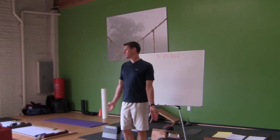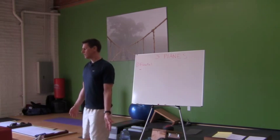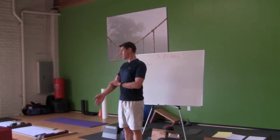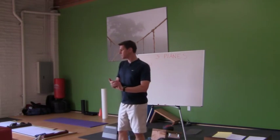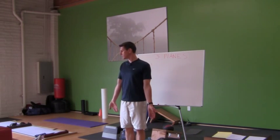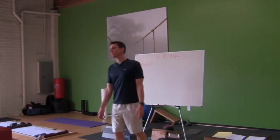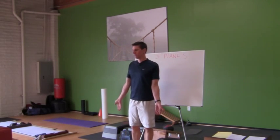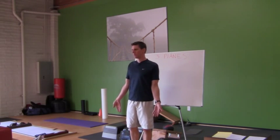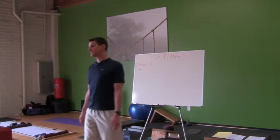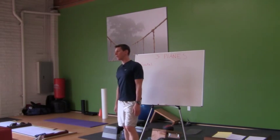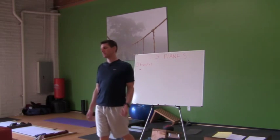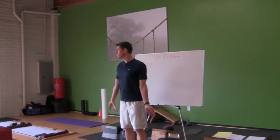If you go towards your thumb, that's radial deviation. The reason is that's your radius bone — when you take somebody's pulse, you take it at the radial pulse on the thumb side. The other direction is ulnar deviation — U-L-N-A-R. Ulnar deviation is important for golf, and a golfer with wrist problems might need therapy.